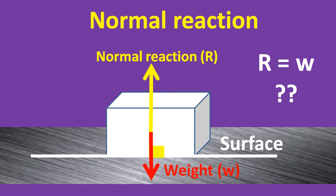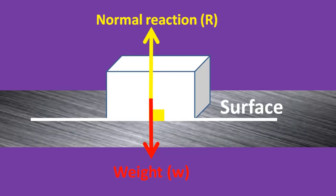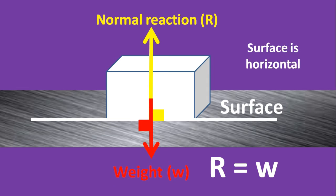The normal reaction is always equal to the weight of the object? No, not always. The normal reaction is equal to the weight of the object only if the weight is perpendicular to the surface, like in the case we have now. Okay, that is if the surface is horizontal.